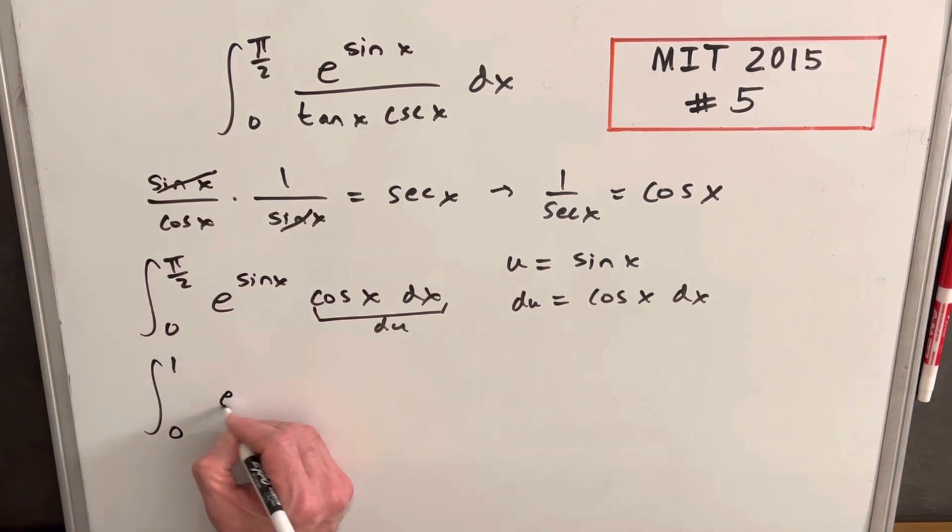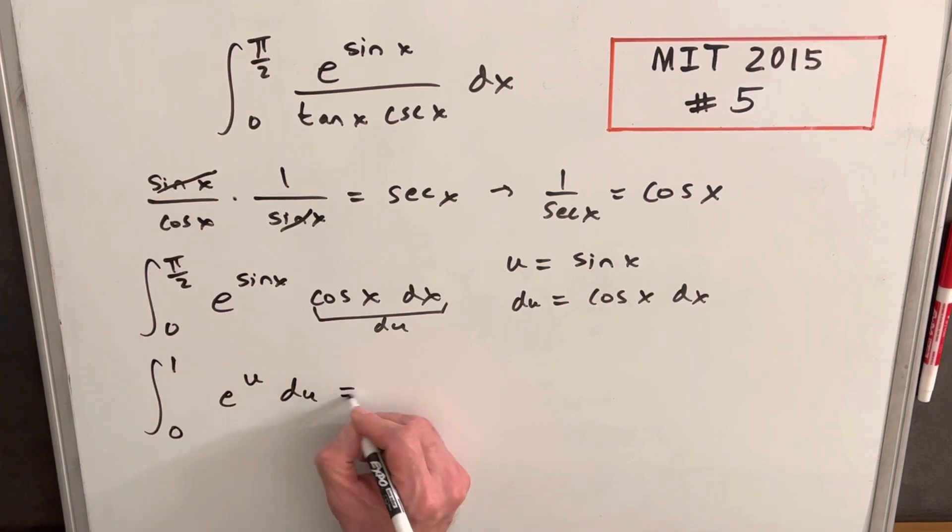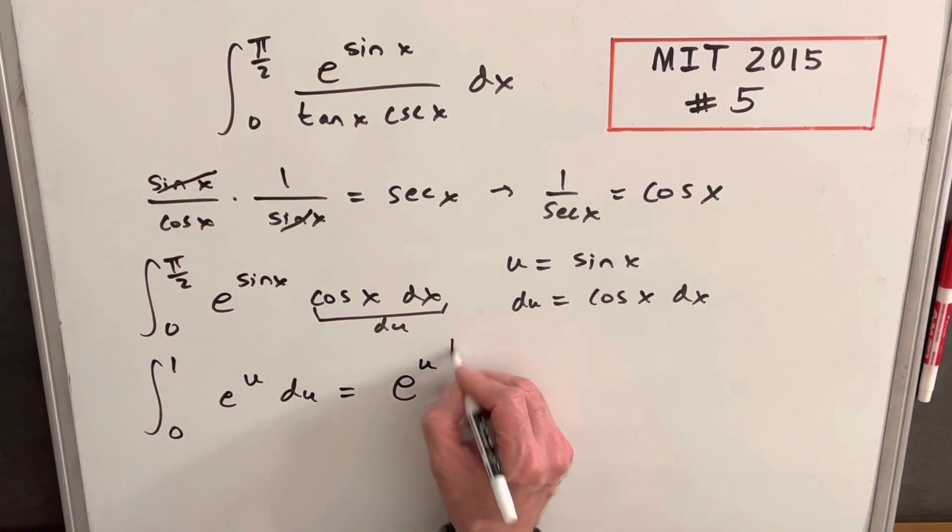Substituting here, we have e to the, this is our u in the exponent, this whole thing being du. We've got ourselves a really simple integral because we know that the integral of e to the u is just e to the u.